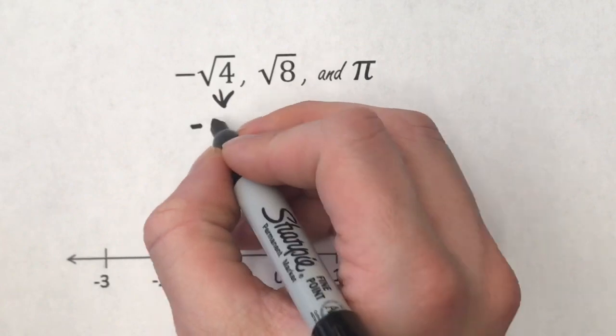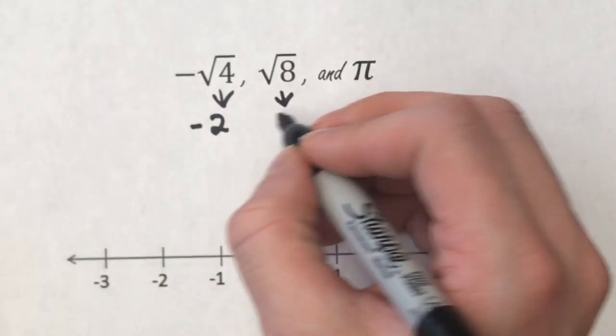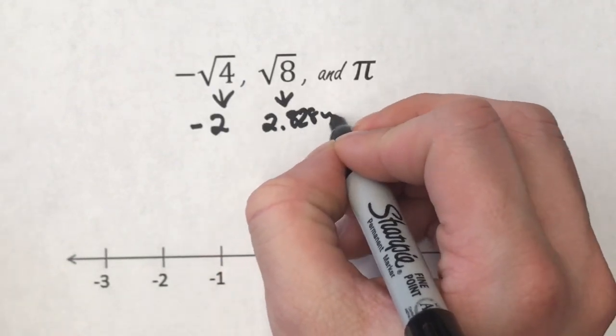Negative square root of 4 is the same thing as negative 2. The square root of 8 is not a beautiful number at all, but it ends up being 2.828 and so on.